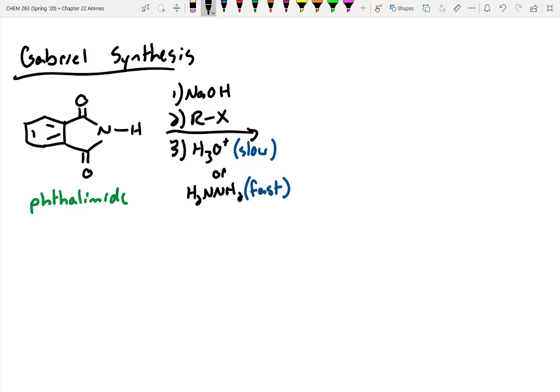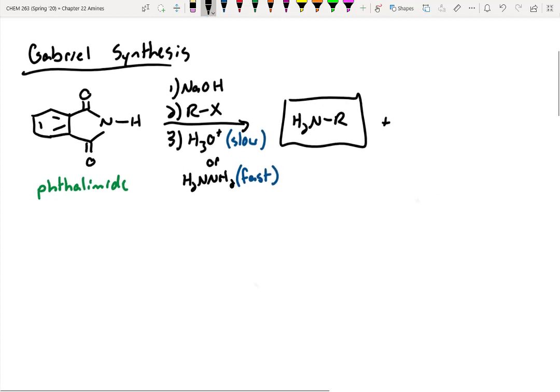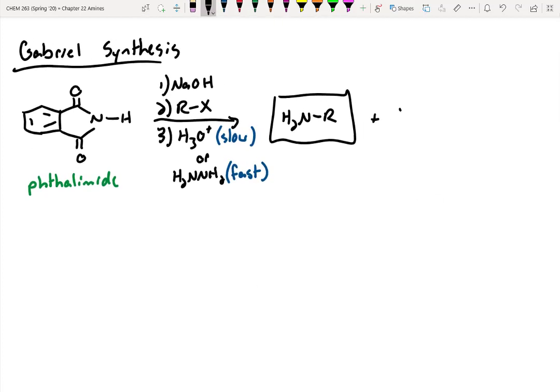And when you do this, what you're going to get is the nitrogen from your phthalimide bonded to the R group in your alkyl halide. So this is going to be your main target product. If you're wondering what happens to the rest of the phthalimide, well, it becomes a byproduct. And in this case, if you use acid, what you get is a dicarboxylic acid, somewhat inert. And I'll make a note that this is if H3O plus is used.